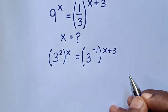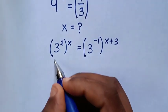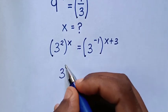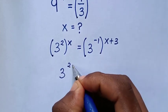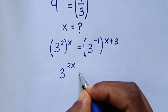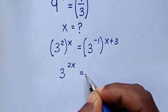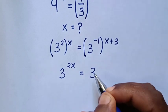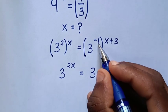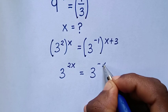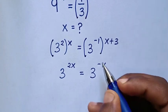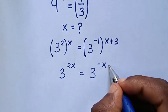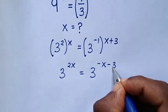Then, in the next step, it will be 3 power of 2x is equal to 3 power of negative 1 times x, which is power of negative x, then power of negative 1 times 3 is power of negative 3.